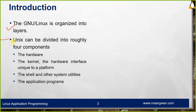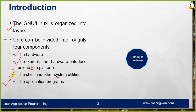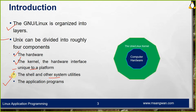Layered approach is everywhere — we talk about it in the network layer, in the operating system layer. GNU Linux is organized into layers. Roughly there are four components: the hardware, the kernel, the hardware interface unique to platform, the shell and other system utilities, and the application programs. At the center of the system is the computer hardware. The hardware interacts with what is known as the kernel — the Linux kernel — and that is specific to the hardware you are dealing with.